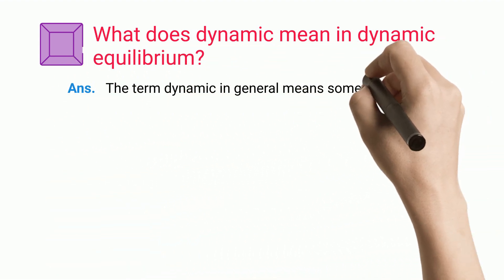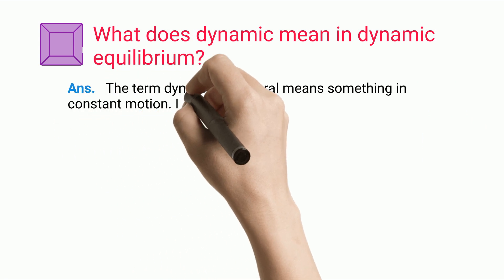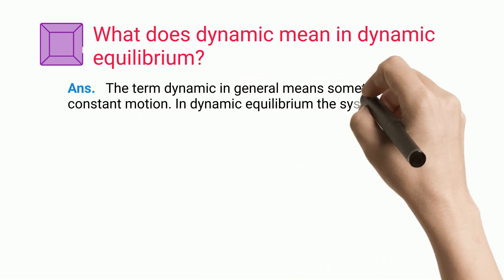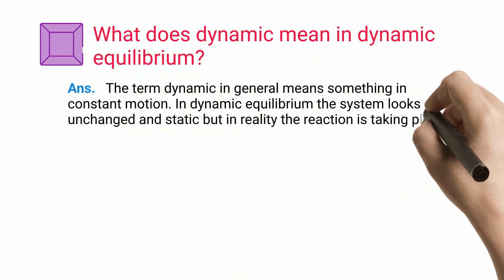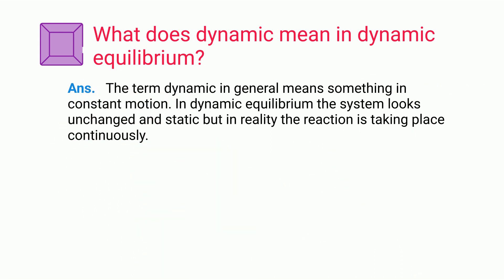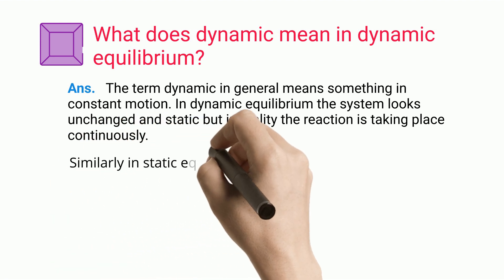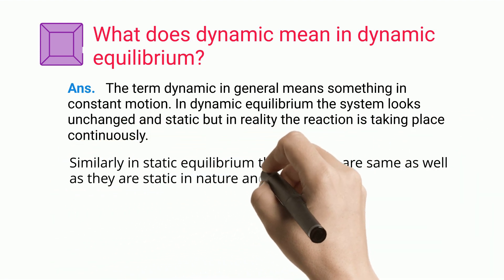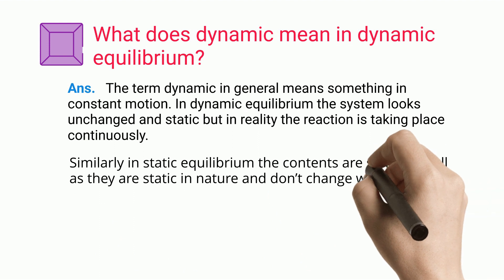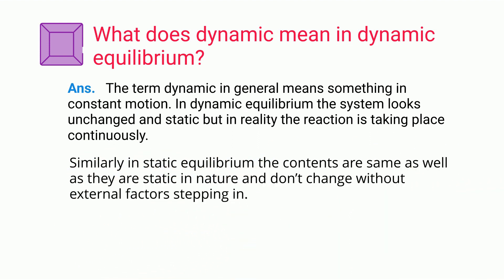What does 'dynamic' mean in dynamic equilibrium? The term 'dynamic' generally means something in constant motion. In dynamic equilibrium, the system looks unchanged and static, but in reality the reaction is taking place continuously. In contrast, in static equilibrium the contents are the same and they are static in nature, not changing without external factors.